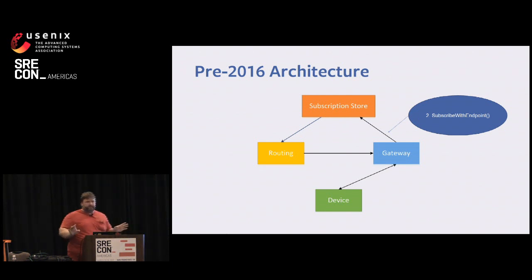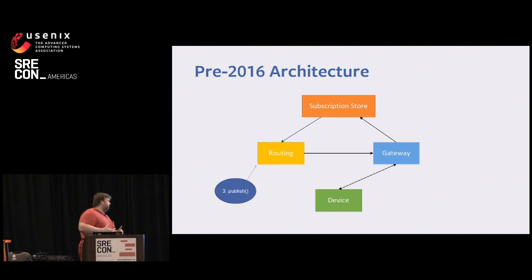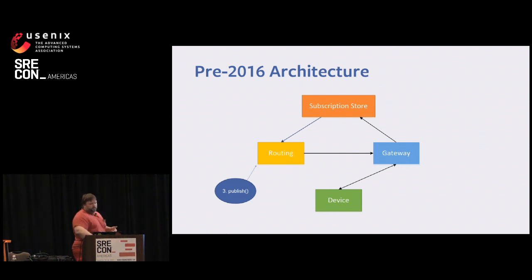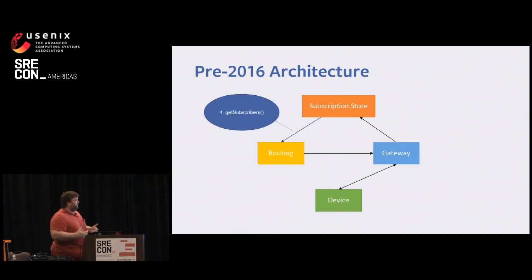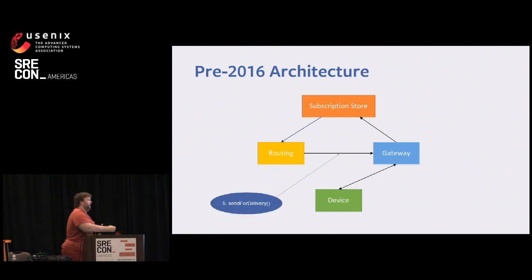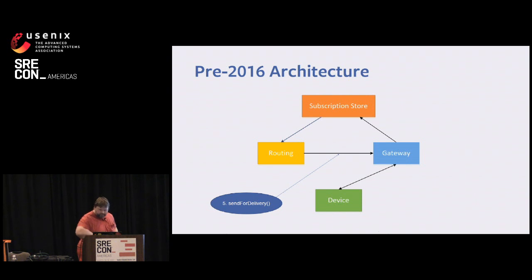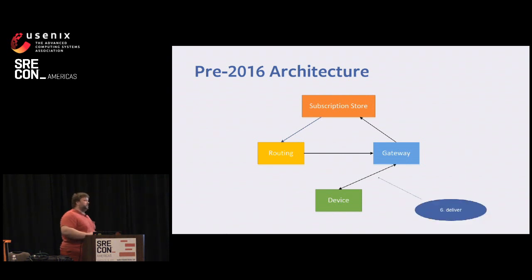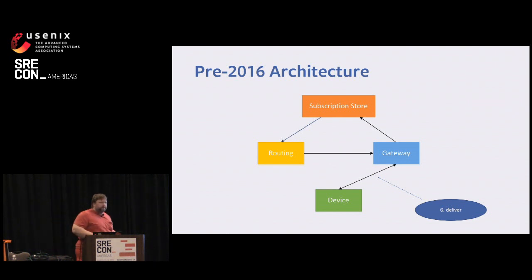That burrito is going to be shoved over to the subscription store. At this point you are fully subscribed. Now one of my other friends looks at the goat pic and likes it. This like triggers a publish in the routing tier. The routing tier will then download every single subscription for the said topic, do some product logic, and forward the request to the gateway saying 'send for delivery.' The gateway will oblige, take that payload, and send it on the wire. The gateway doesn't really do much beyond protocol semantics.